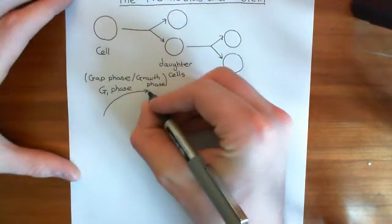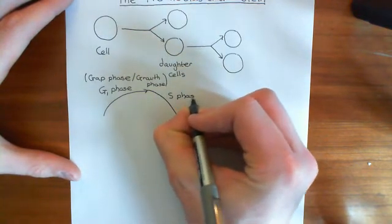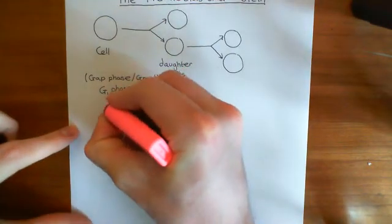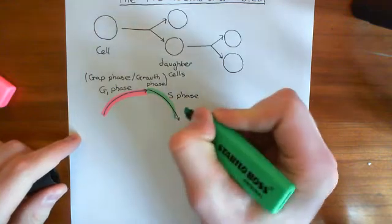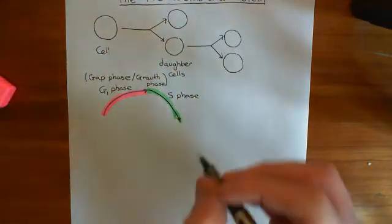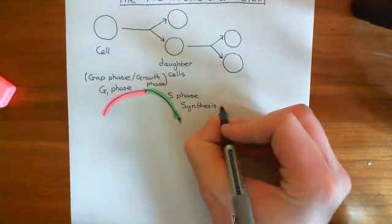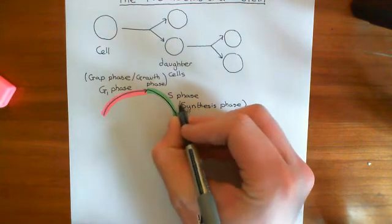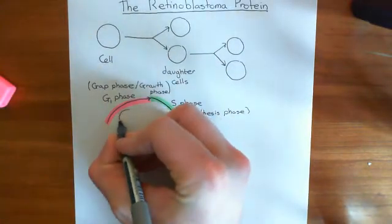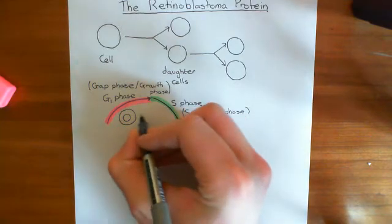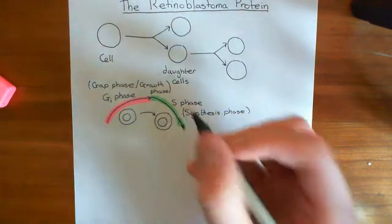The next phase is the S phase, which stands for synthesis phase. This is the phase in which you copy your DNA, and once you've done that, you are on the road to dividing. In your genome you have 46 chromosomes and they come in pairs — for example, two copies of chromosome 1, known as homologous pairs. You have 23 pairs of chromosomes in total.